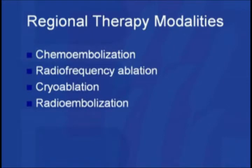The regional image-guided therapy modalities that are currently available are listed on this slide. Chemoembolization is what we'll see today, and that involves injecting chemoembolic material into the hepatic arterial circulation while sparing the portal venous circulation. Radio frequency ablation and cryoablation are both local methods that use heat, in the case of radio frequency ablation, and cold, in the case of cryoablation, to kill tissues. They can be used in other organs besides the liver.